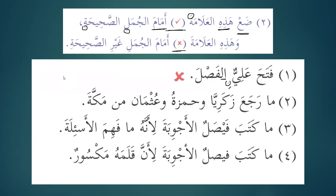The next one is: ma raja'a zakariya wa hamzatu wa uthmanu min makkata — Zakariya, Hamza, and Uthman did not return from Makkah. Is this sahih or ghair sahih? This one is sahih.